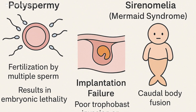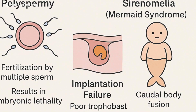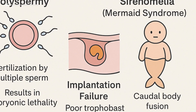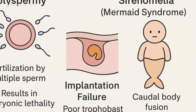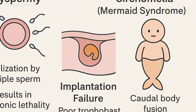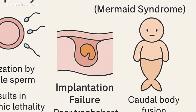When this choreography fails — polyspermy, failed implantation, or disrupted gastrulation — development halts. Even rare conditions like sirenomelia trace back to early embryonic missteps.